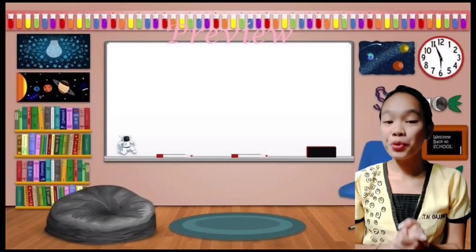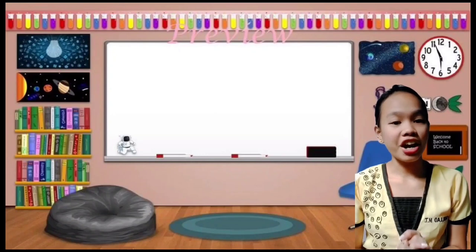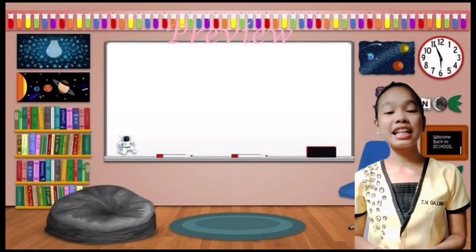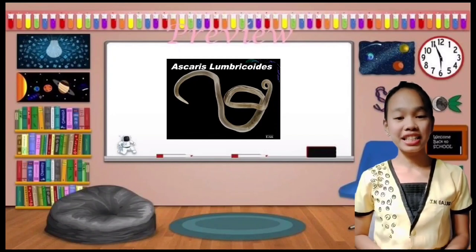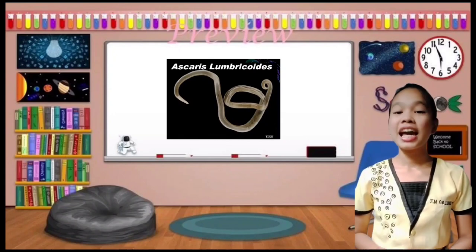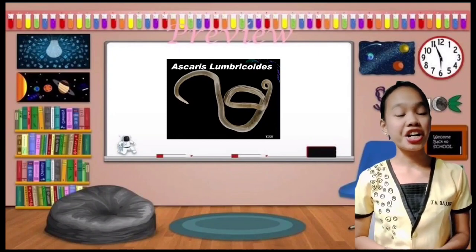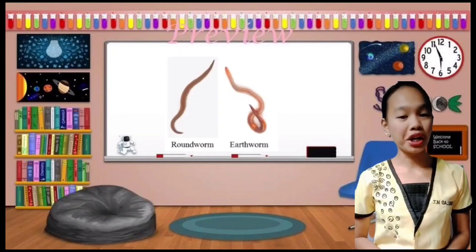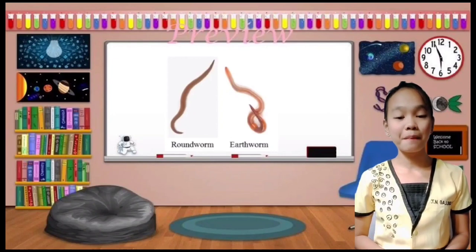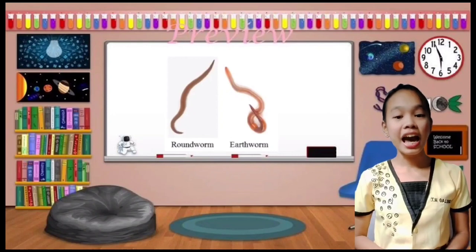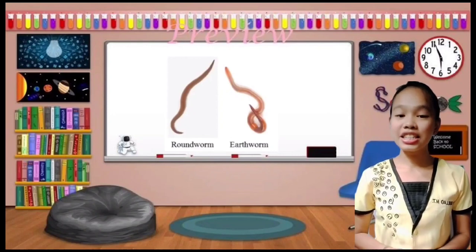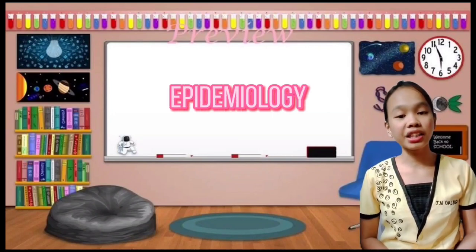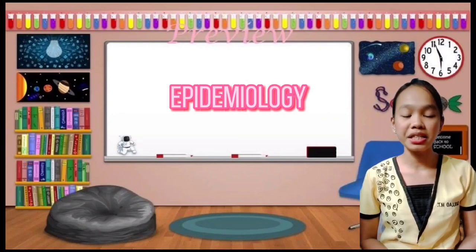Good morning students! Welcome back to my channel! For today's video, we will talk about another parasite named Ascaris lumbricoides. Ascaris lumbricoides is commonly known as roundworm. It is derived from the Latin word 'lumbricoides' which means earthworm, and it is named so because of its resemblance to earthworm. It is the largest intestinal nematode of man. Humans are the only natural host and reservoir of infection. The disease caused by Ascaris lumbricoides is known as Ascariasis, and more than 1.4 billion people are infected, representing 25% of the world's population.